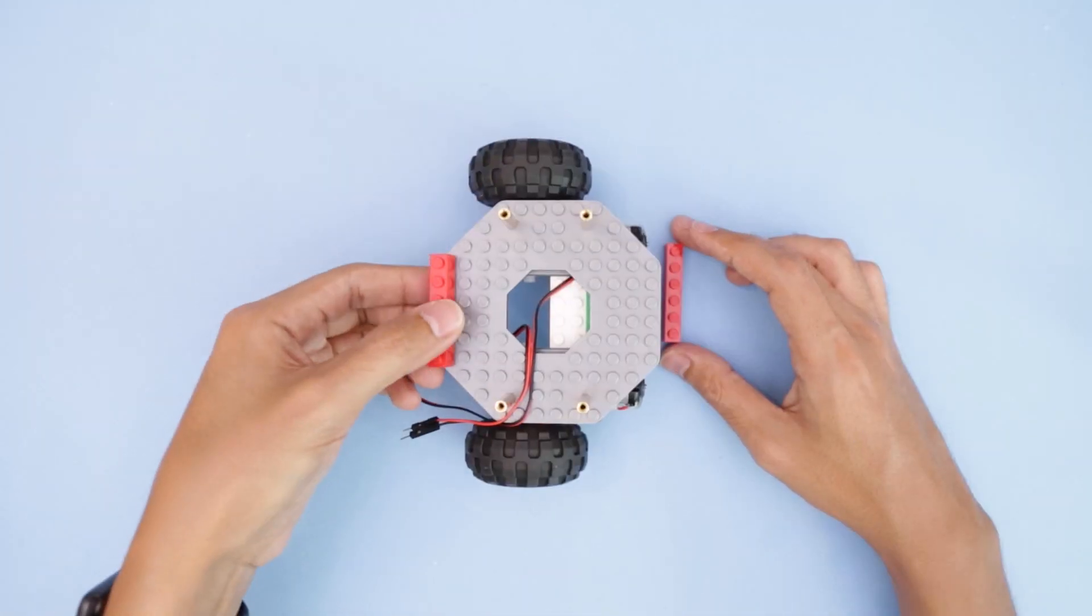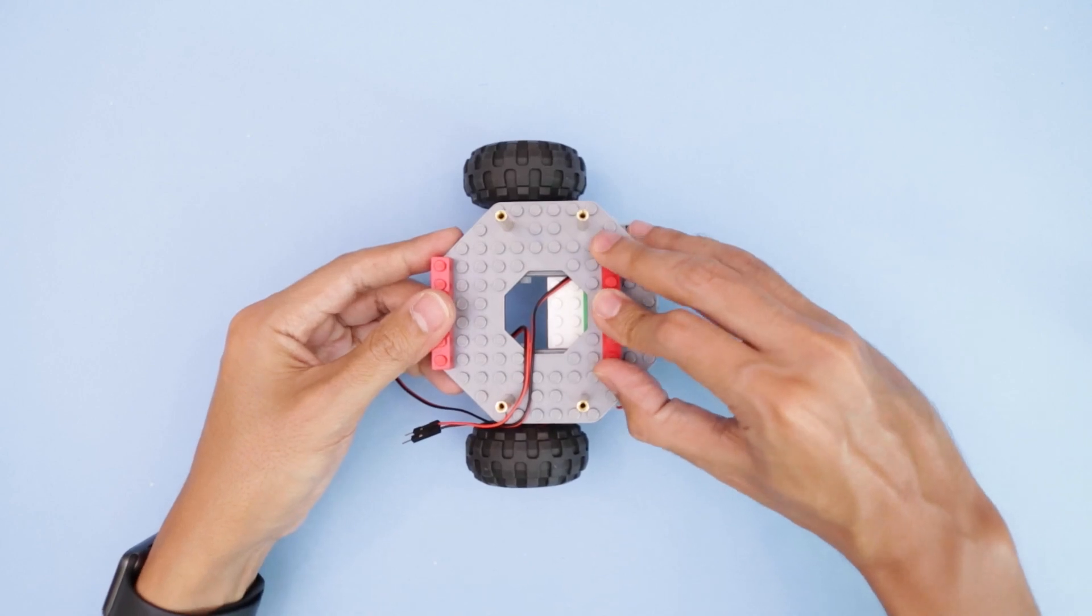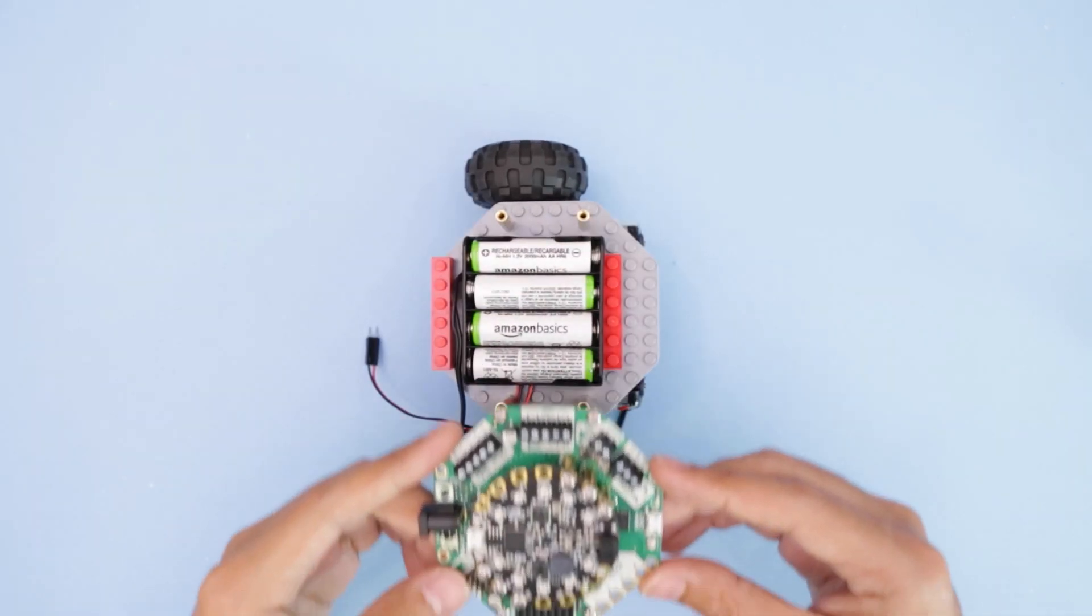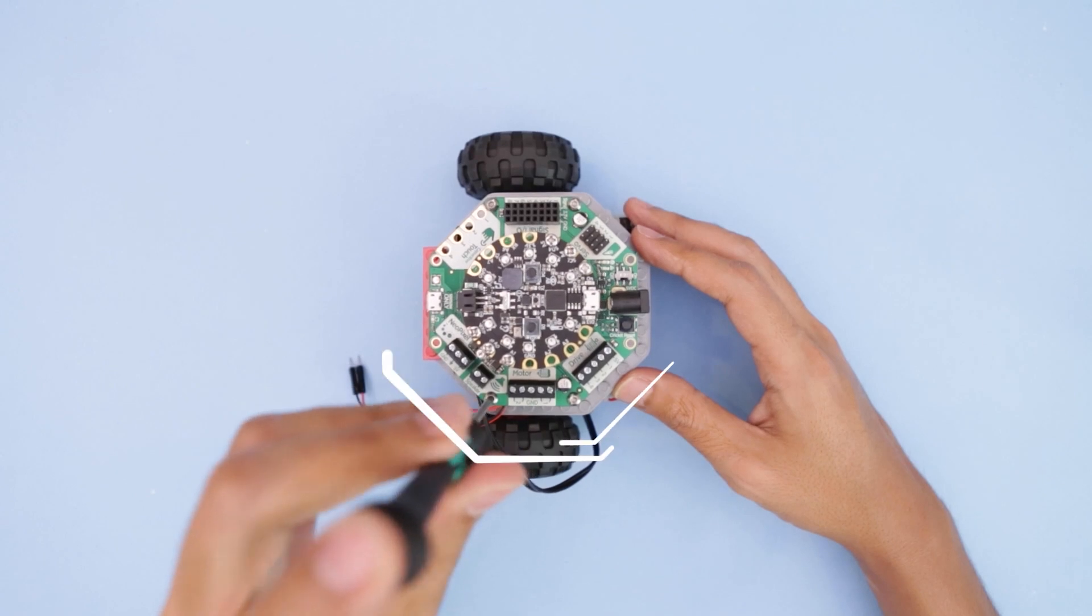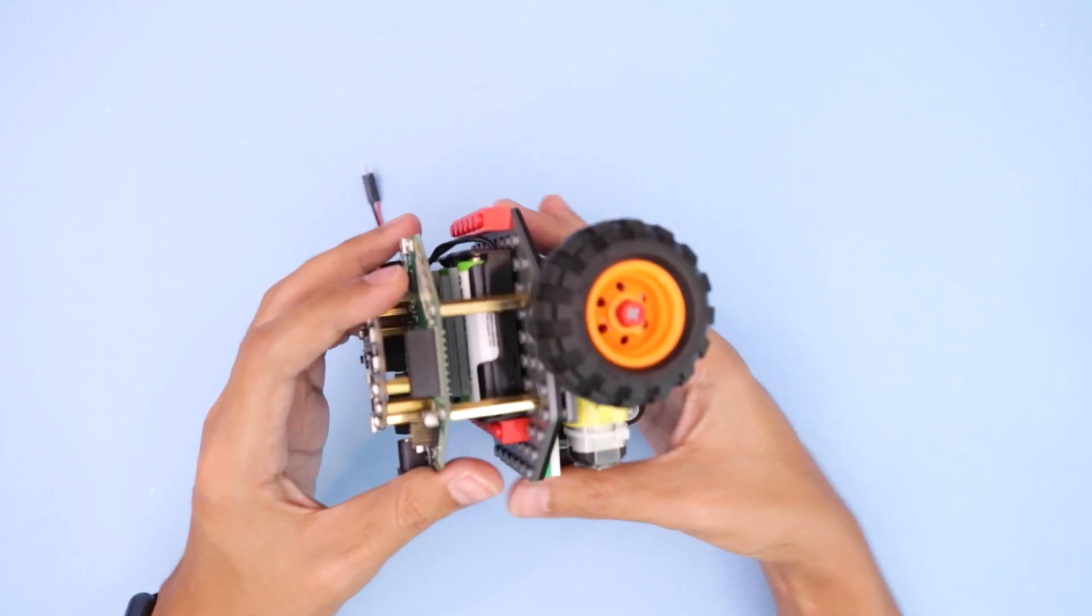We can also use Lego bricks to create a housing for the battery pack. This double A battery pack fits nicely in between the standoffs. Place the Cricket PCB over the battery pack and secure with machine screws. The bricks hold the battery pack in place so it won't shake around too much.